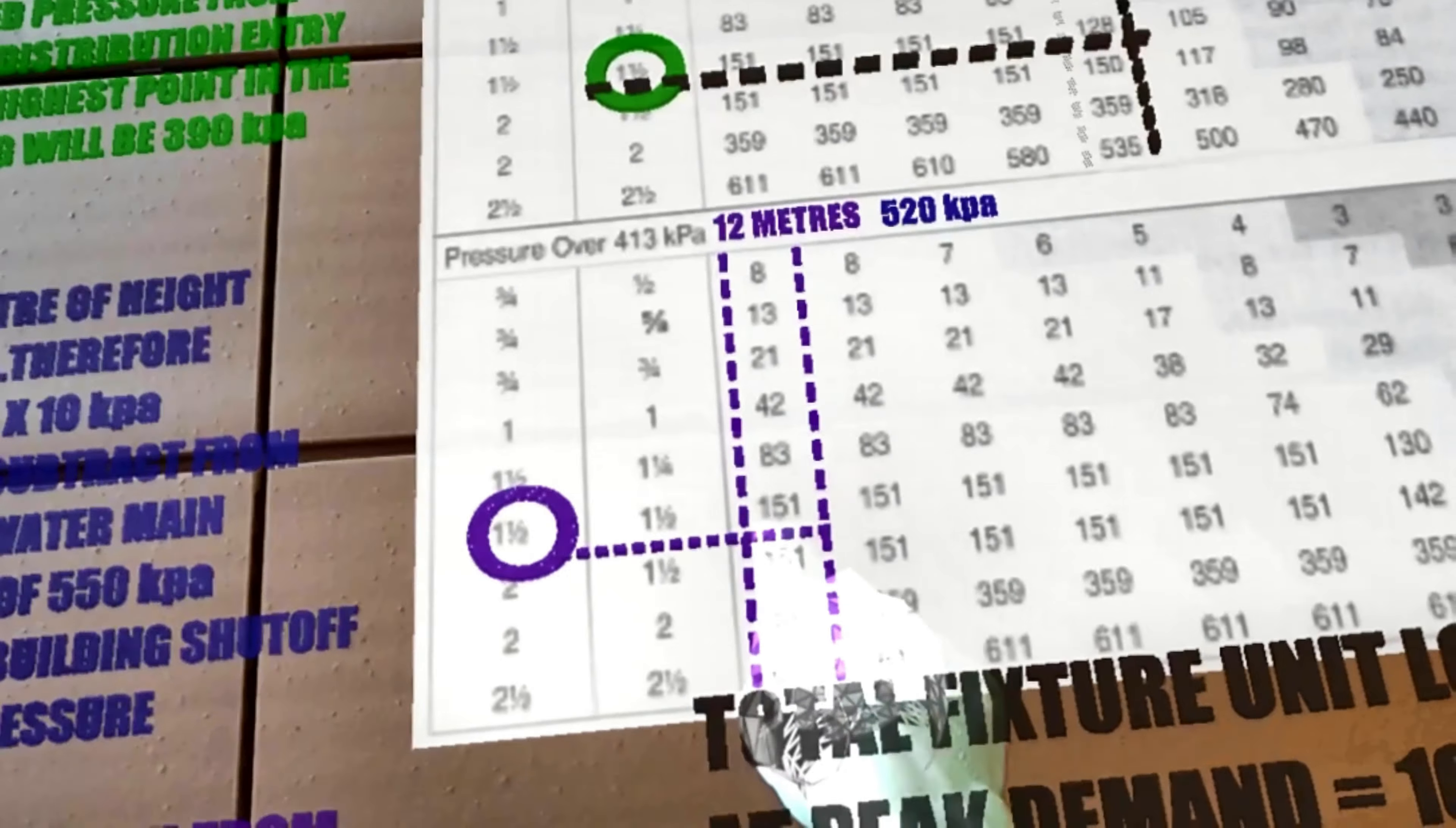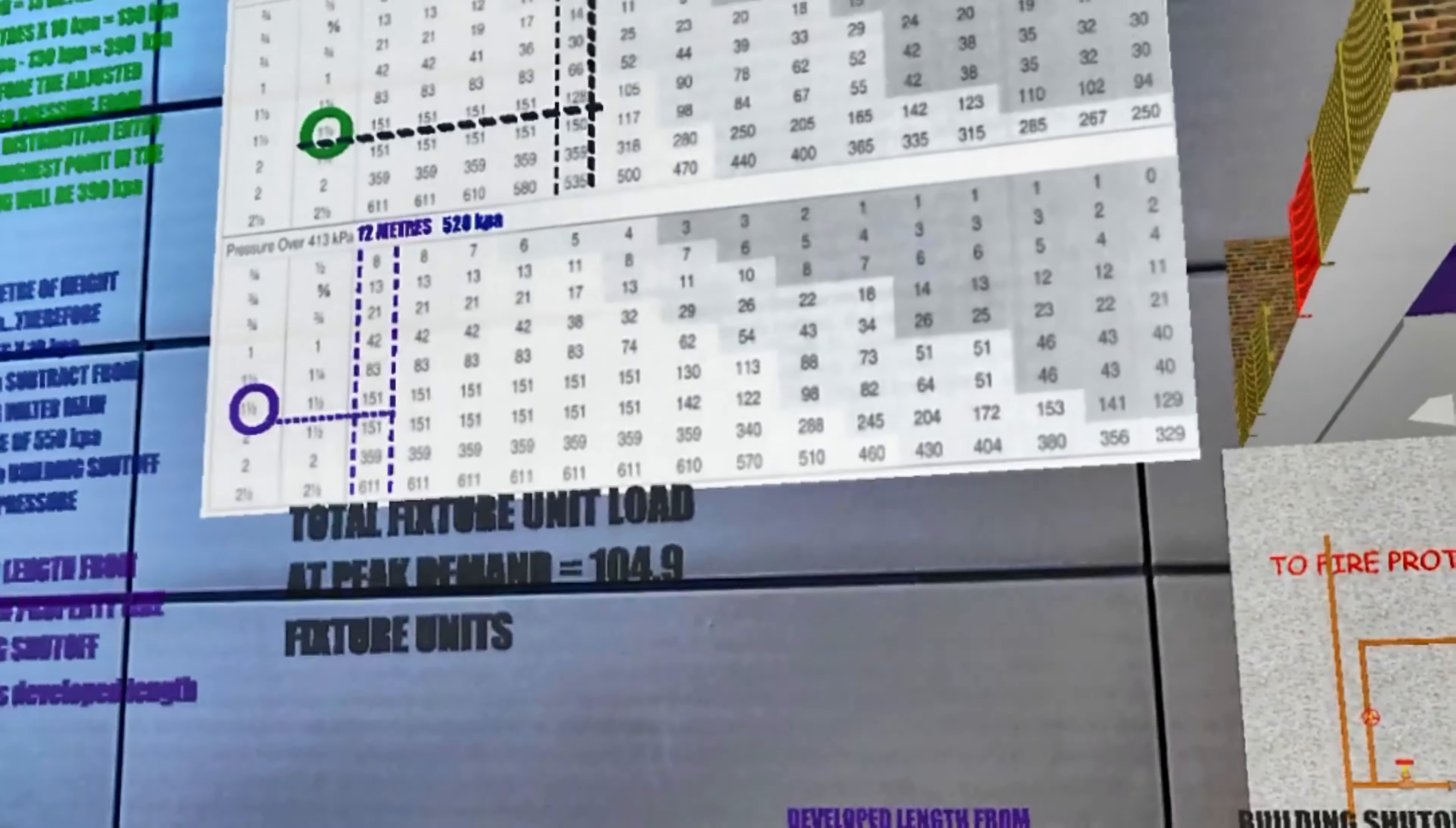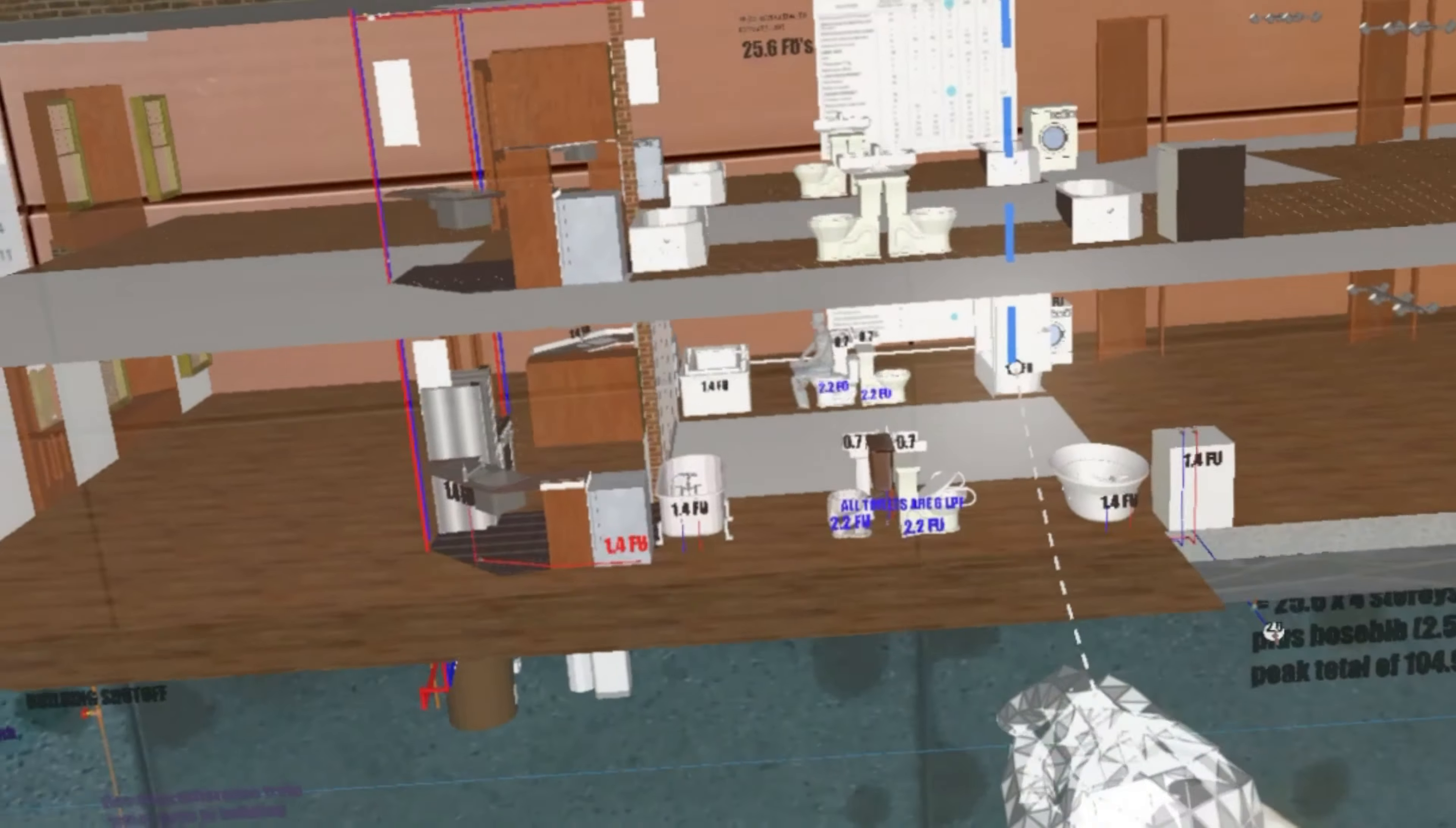So that means this service from the curb cock to the building shutoff will be an inch and a half pipe, and that's how you size all the pipes. That's how you size the pipe. And instead of you or them guys watching the video...